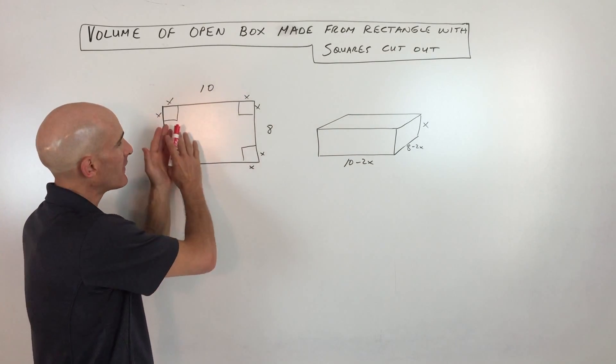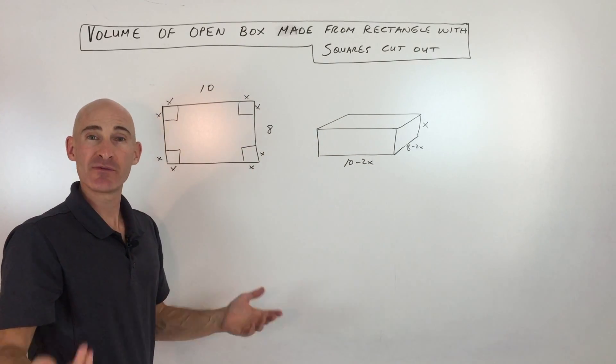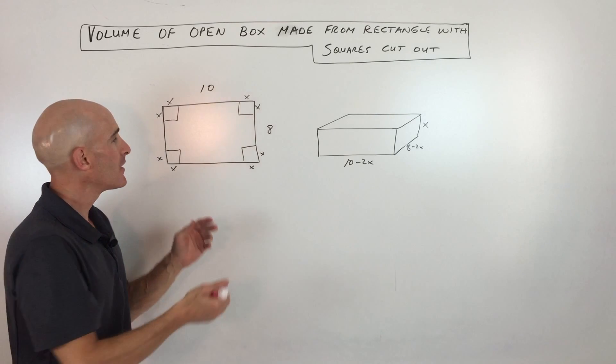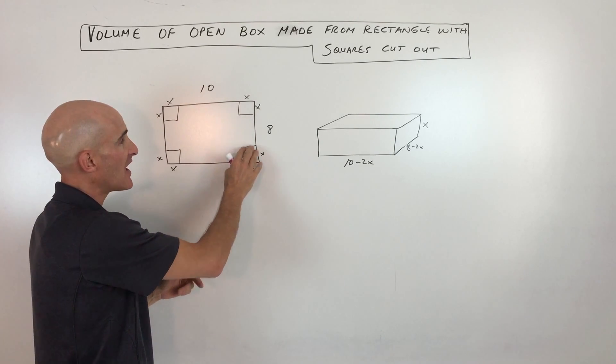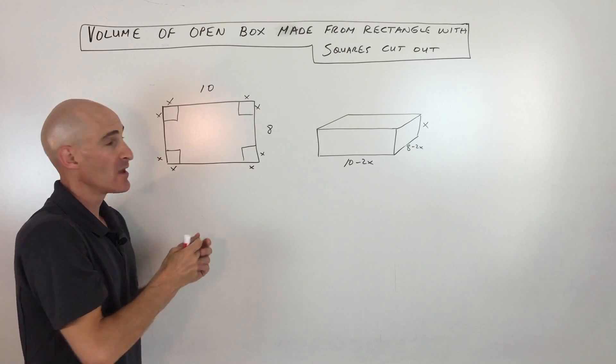Basically what it is, it's a problem like this. They give you a flat sheet, maybe it's a sheet of metal, maybe it's cardboard or paper. But what they tell you is that they're going to cut out squares of equal size from each of the four corners.